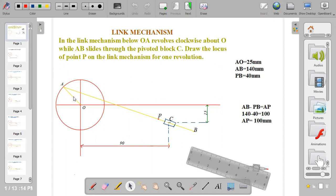AB is the rod or link, giving us 140mm. We are to plot the locus of point P on the rod for one revolution. That means at every point on the circle we are to plot the locus of point P. We're given the distance of PB to be 40mm.